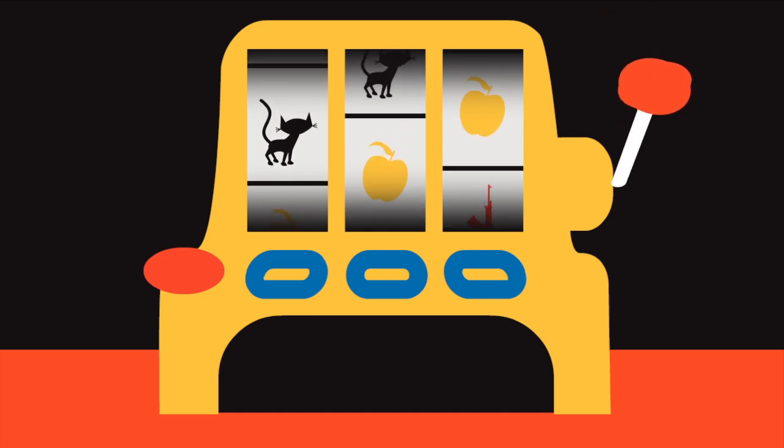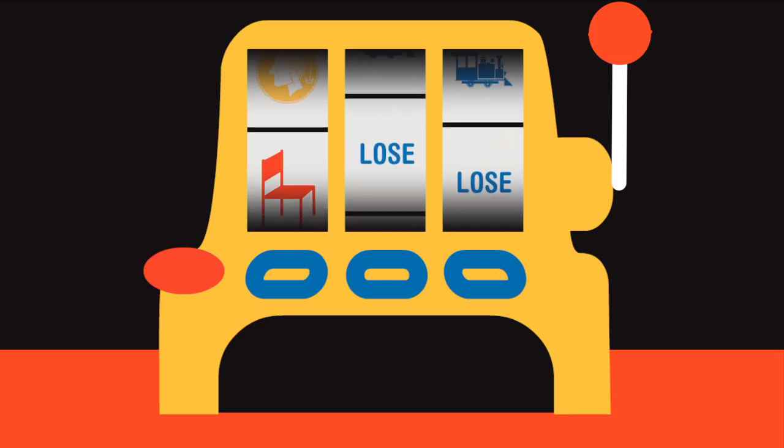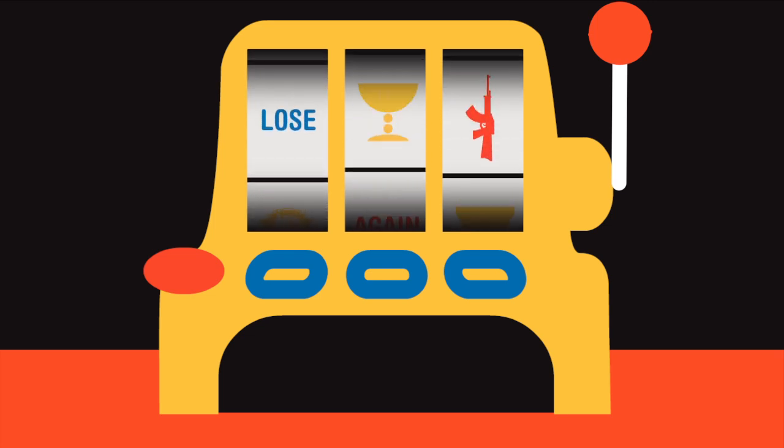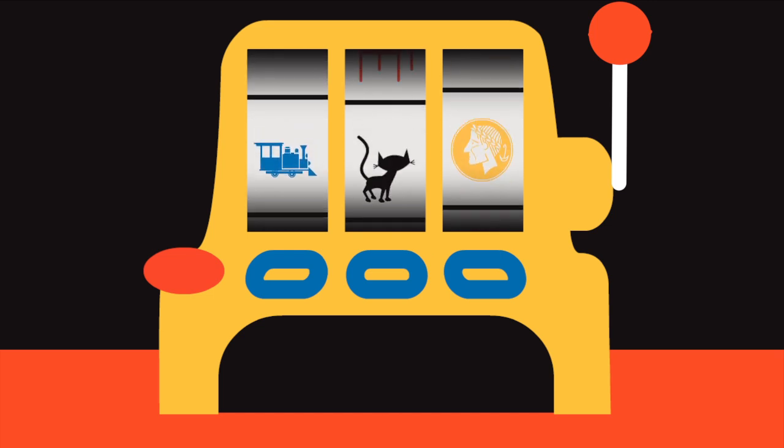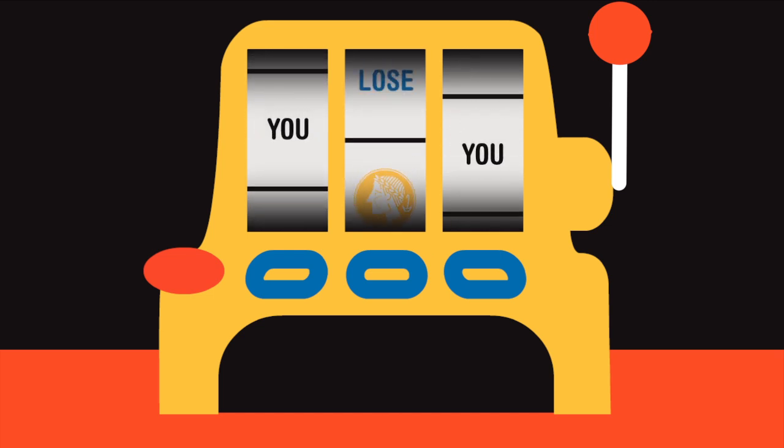This is called the gambler's fallacy, our assumption that probability changes depending on past results. And this may explain why casinos make so much money.